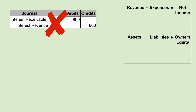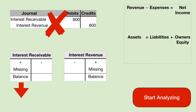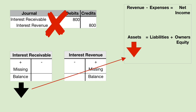Here's our third example. Here is the adjusting entry that we neglected to make. Let's make T-accounts for these two neglected line items. Interest receivable is an asset, so assets have the plus sign on the debit side — that means the normal balance of an asset is debit. Interest revenue is a revenue account and has a credit balance. We're missing a credit in that account. The interest receivable is missing a debit and therefore the balance is understated. Interest receivable is an asset, therefore assets are understated on the balance sheet. Now let's look at the interest revenue account — we're missing a credit in this account and therefore the balance is missing a number and it is understated.